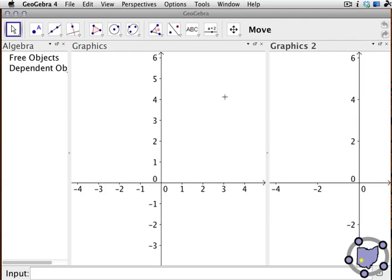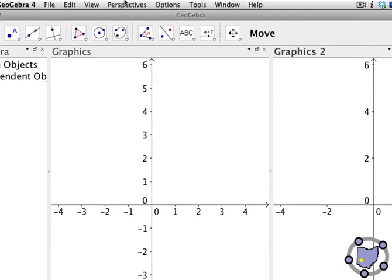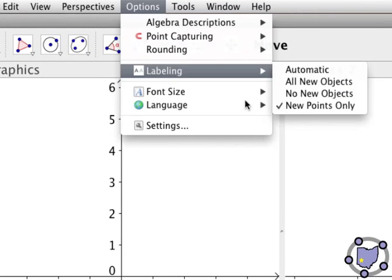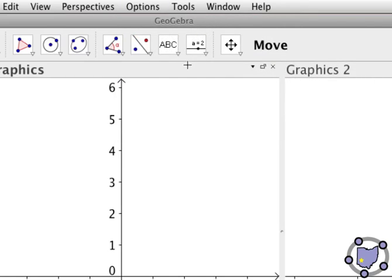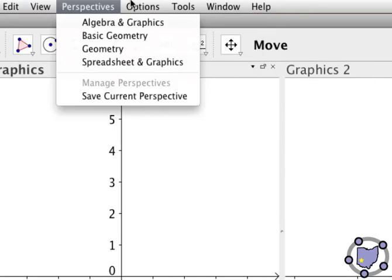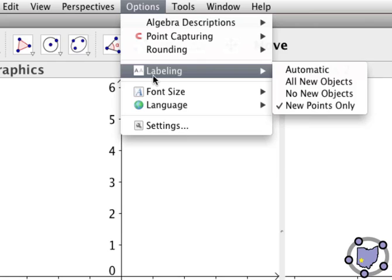So let's go ahead and set the labeling options. If you go under options, pick labeling. We only want new points to be labeled. And that's true in both windows.